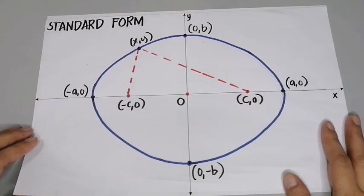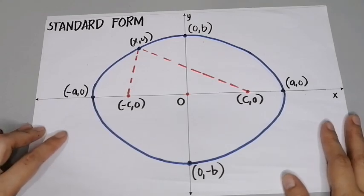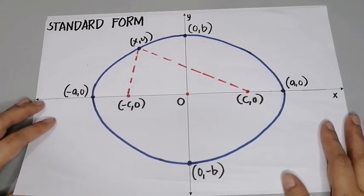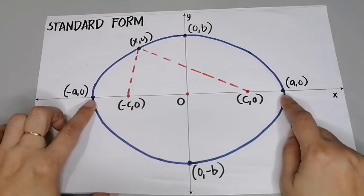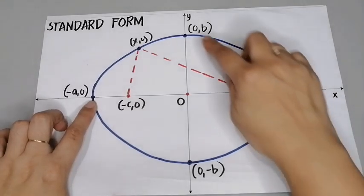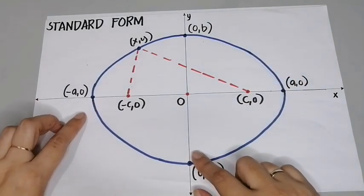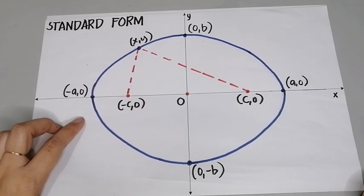Hello class. For today's video, we will be deriving the standard form of an equation of an ellipse with this orientation, where the major axis is horizontal and the minor axis is vertical, by using the distance formula.